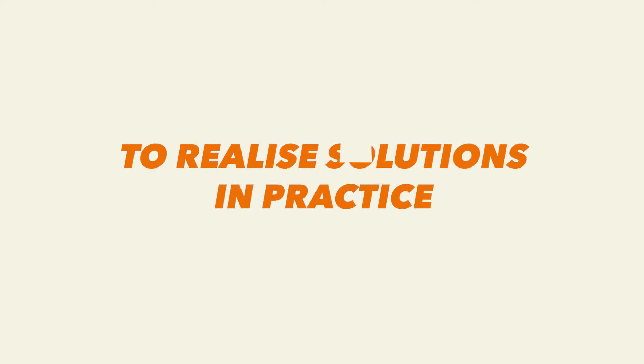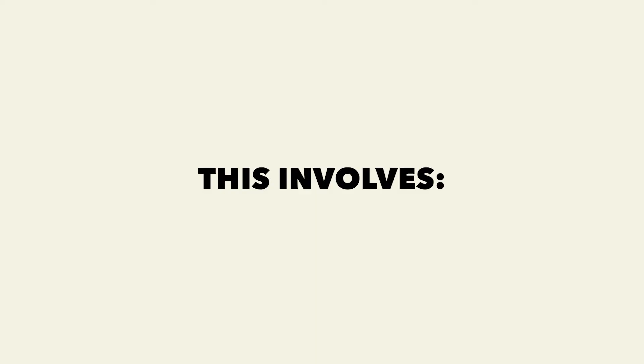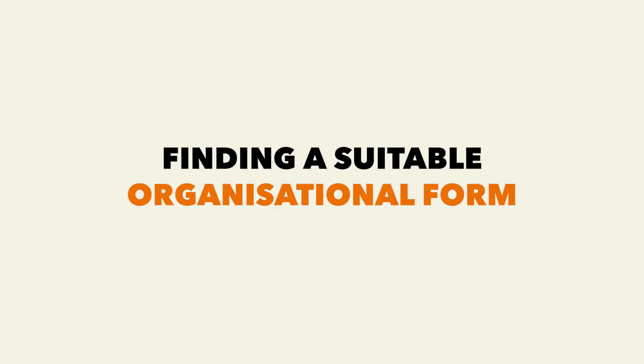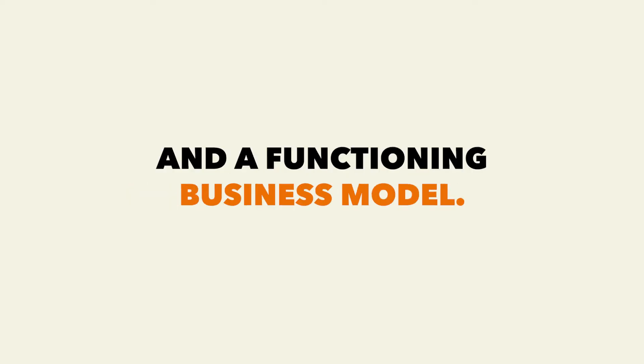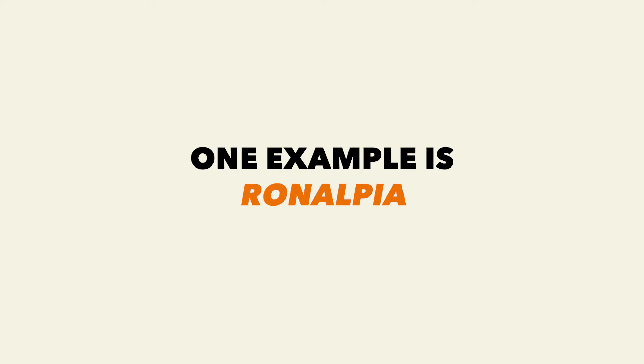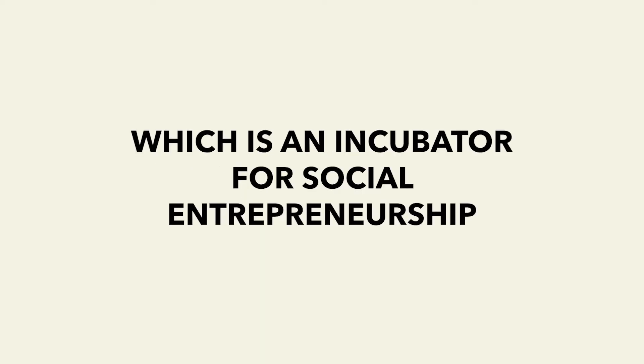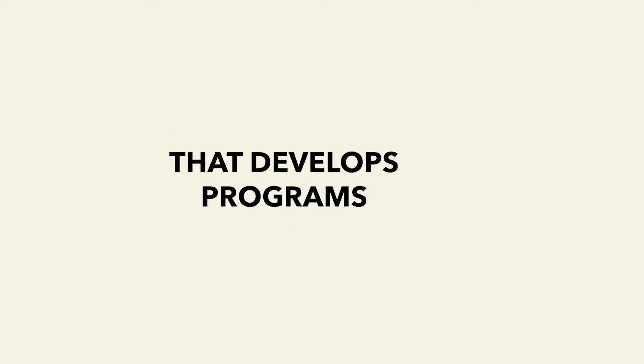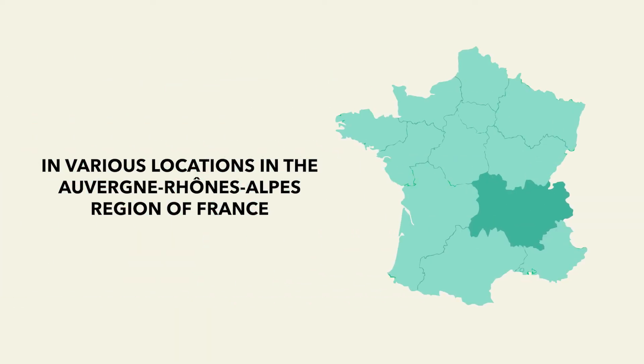Four: To realize solutions in practice. When there is an idea that has been tested, it needs to be implemented in a practical way in a real-life context. This involves, among other things, finding a suitable organizational form and a functioning business model. One example is Ronalpia, an incubator for social entrepreneurship that develops programs in various locations in the Auvergne-Rhône-Alpes region of France. They offer support in the creation of projects by structuring a business model and finding contacts within the local ecosystem.